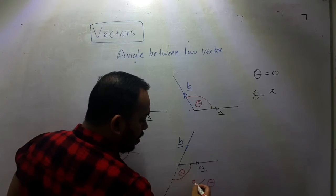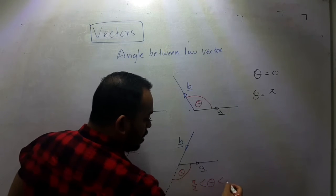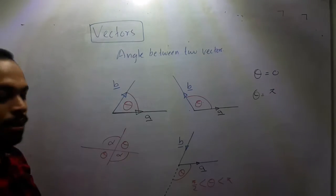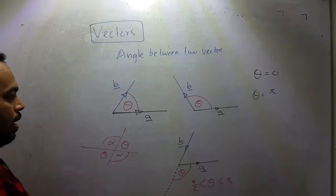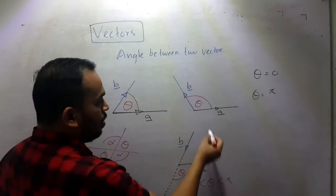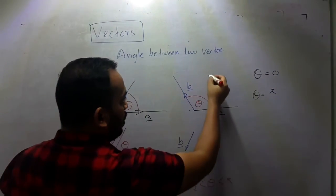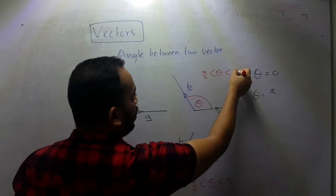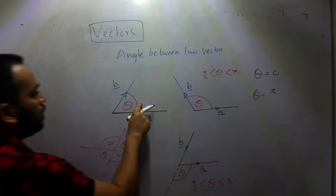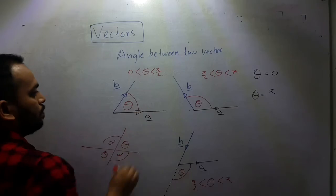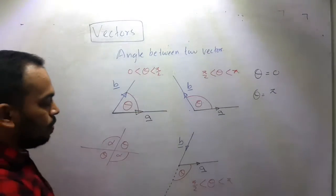In this case, theta is greater than pi by 2 and less than pi. So this is the angle between 0 and pi. This is the angle between pi by 2 and pi, and theta between 0 and pi by 2. Acute angle and obtuse angles.